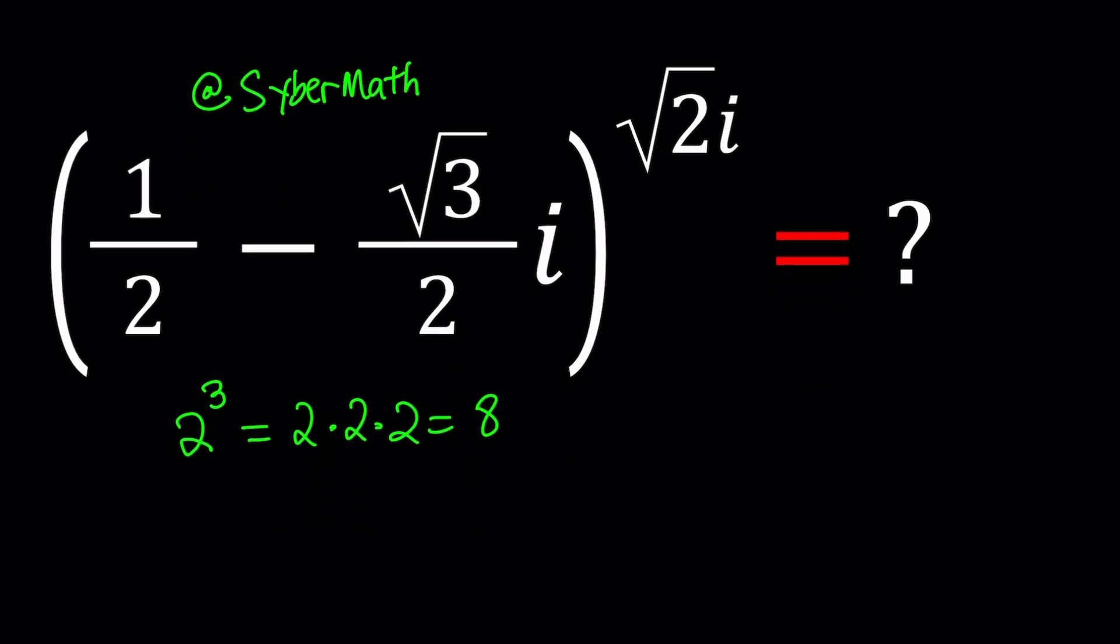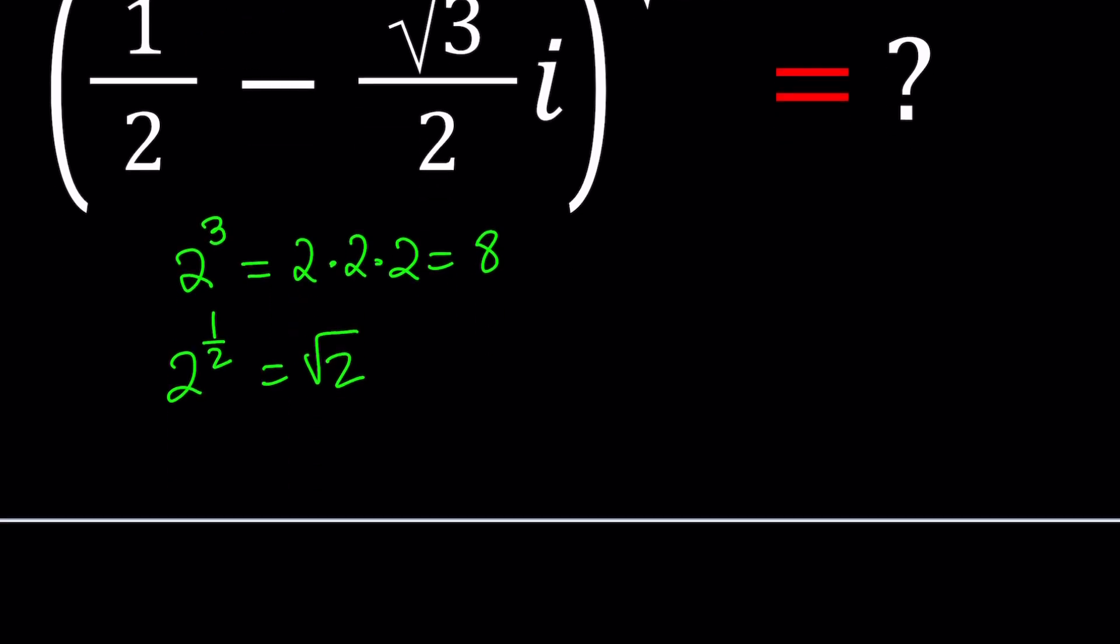What happens if the exponent is a rational number like one half? Then this just means the square root. One third means the cube root and so on. What if there's a negative number in the base? That's a different story. Then you're not talking about a real number anymore.